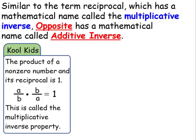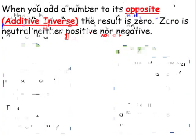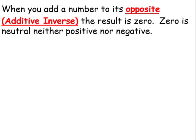Similar to the term reciprocal, which has a mathematical name called the multiplicative inverse, opposite has a mathematical name called the additive inverse. When you add a number to its opposite additive inverse, the result is 0.